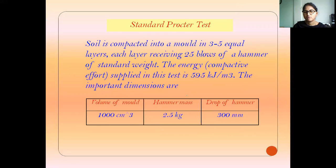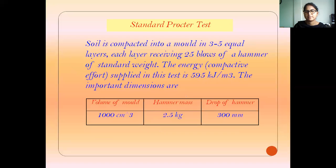For the standard test, the volume of the mold is 1000 cm³, the hammer weight is 2.5 kg, and the number of blows required for each layer is 25 blows. The soil is compacted in a mold in 3 equal layers. The height of drop of the hammer is 300 mm.